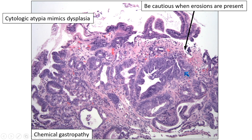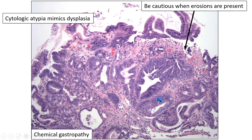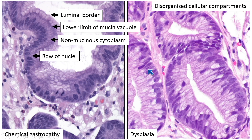A few clues that you're dealing with a benign process: you see superficial fragments that do show maturation, and the overall proliferation respects the boundaries within the mucosa. You'll see a lobular architecture overall with preserved bundles of smooth muscle cells and vessels permeating the mucosa. In general, don't make a diagnosis of low-grade dysplasia, and be very careful about a carcinoma diagnosis in the setting of chemical gastropathy with an erosion.